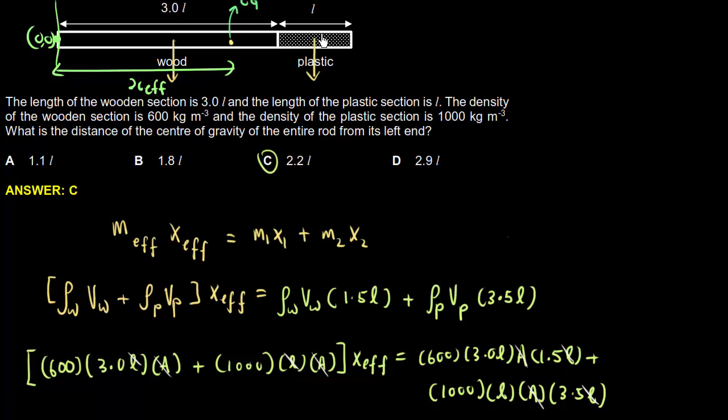M2 is for the plastic. For the plastic, it's density times volume. The effective length is from here to here. So it must be 3 plus 0.5L, so it's 3.5L.